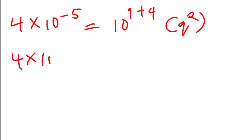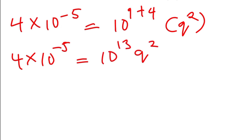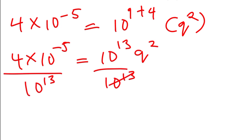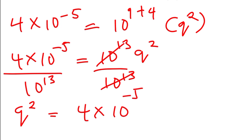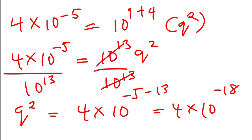So four times ten to the power of negative five equals ten to the power of thirteen times q squared. Dividing both sides by ten to the power of thirteen, q squared equals four times ten to the power of negative five minus thirteen, which is four times ten to the power of negative eighteen.